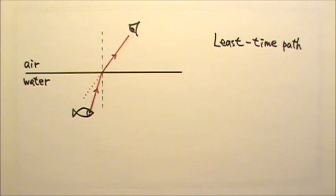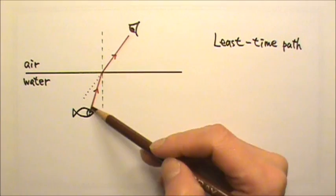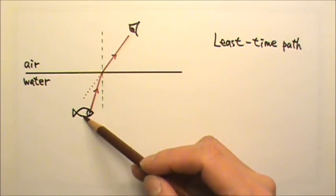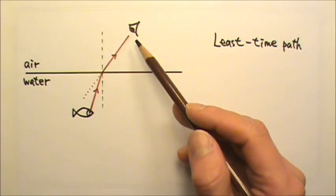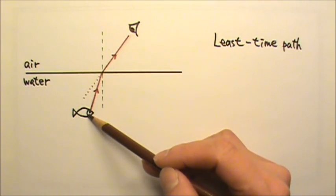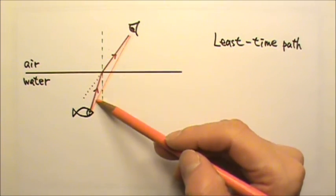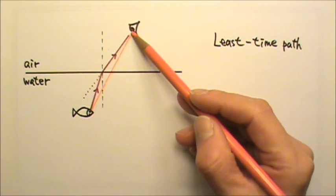One more interesting thing about the path of the light ray is that this path happens to be the least time path between the fish and the person. It takes light less time to follow this bent path than even a straight path between the two. It's right that the straight line path involves shorter distance.